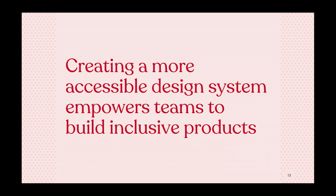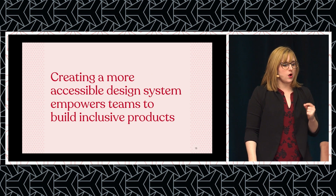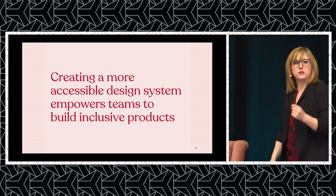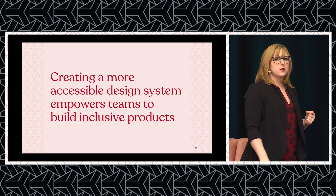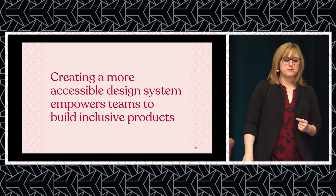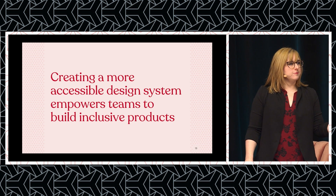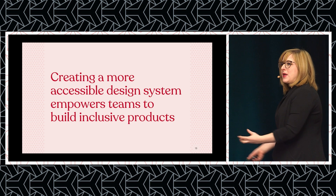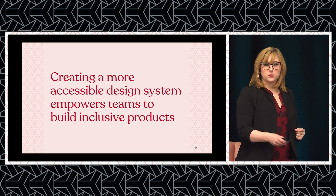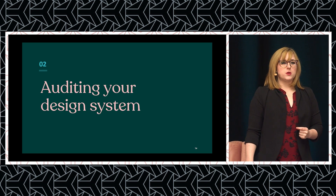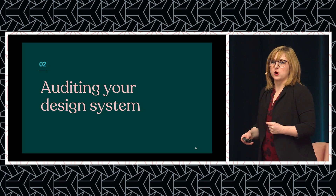This is why design systems are a core part of accessibility across our products. A design system that doesn't include accessibility creates products that are inaccessible — and inaccessible products fail users with disabilities. Alternatively, creating a more accessible design system empowers teams to make accessible products, and accessibility is core to usability. Auditing your design system is where you can start.